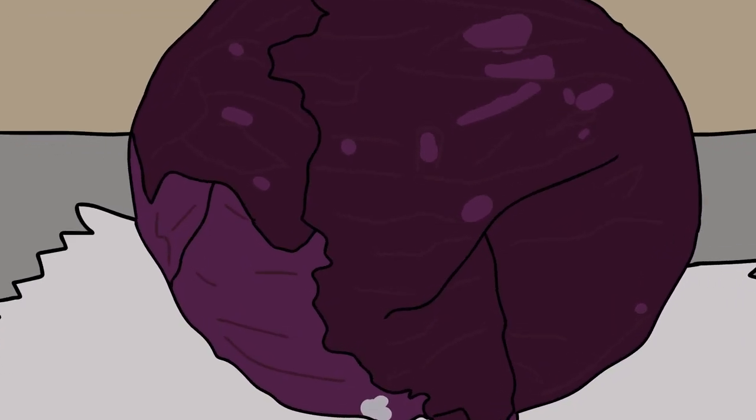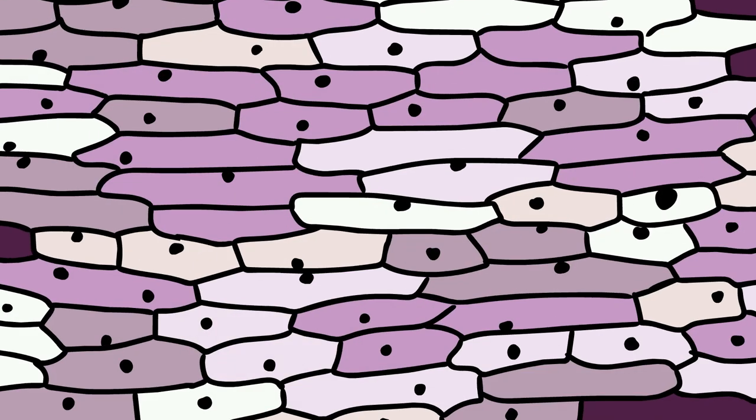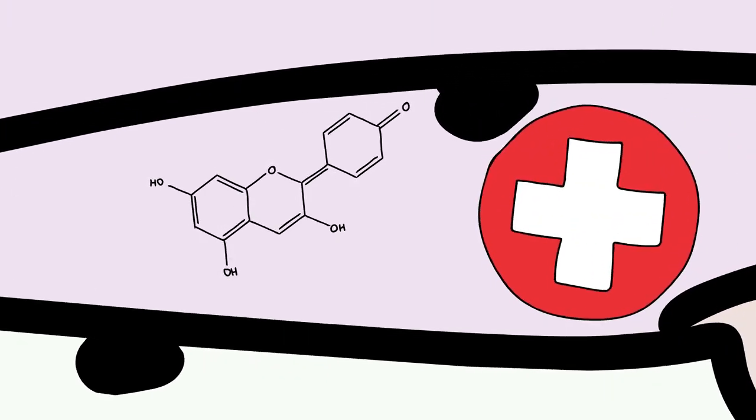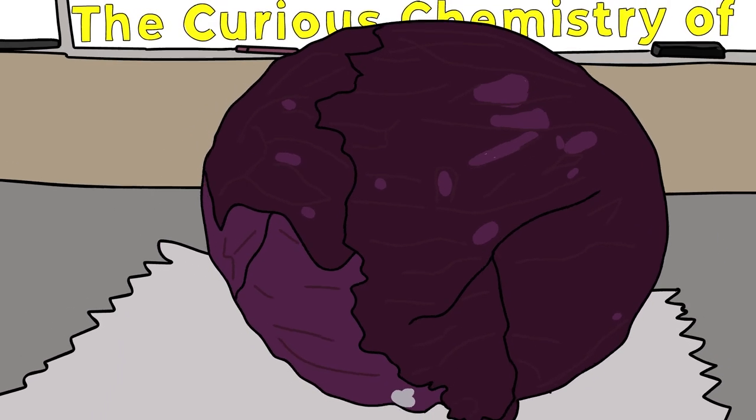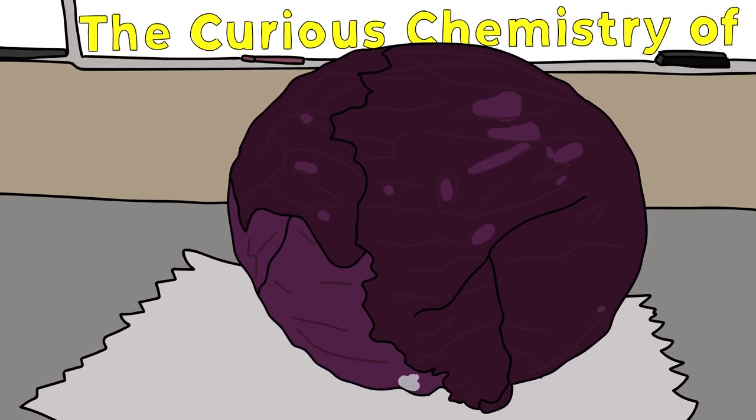A group of flavonoid molecules called anthocyanins are the source of the cabbage's health benefits, they're antioxidants, good for your heart health, and they're also the source of the cabbage's alluring purpley color. Let's start with the purple color and then examine a fascinating trick that the anthocyanin has up its sleeve.